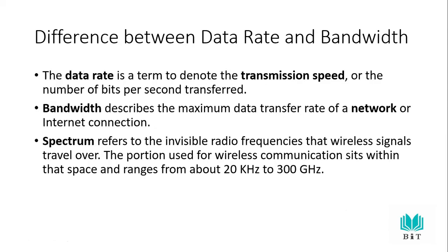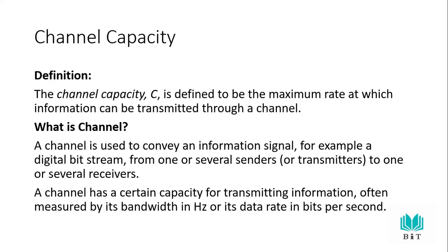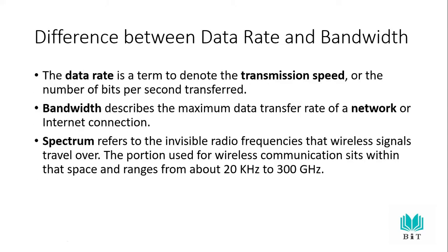You can see channel capacity and the channel itself. What is the difference between both? That's the data rate and bandwidth. Data rate is a term to denote transmission speed — the number of bits per second transferred. Bandwidth describes the maximum data transfer rate of a network or internet connection.